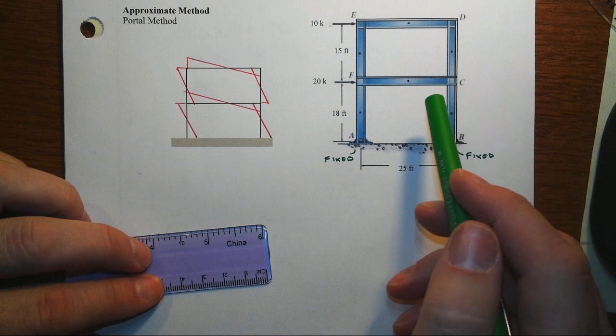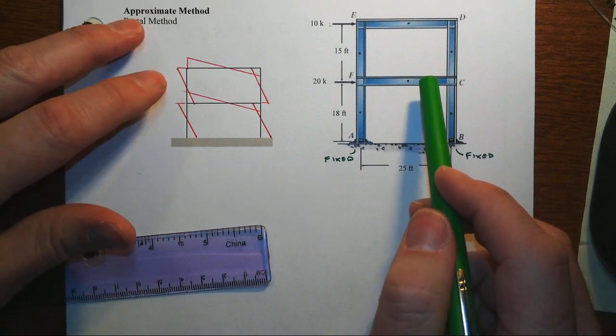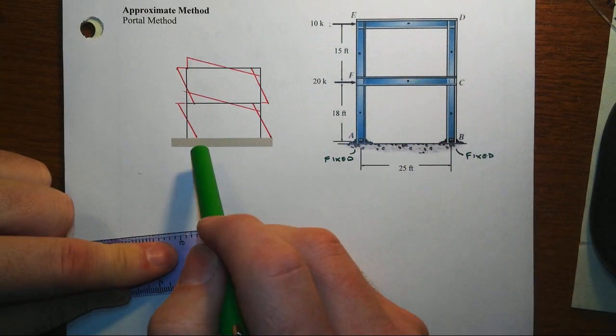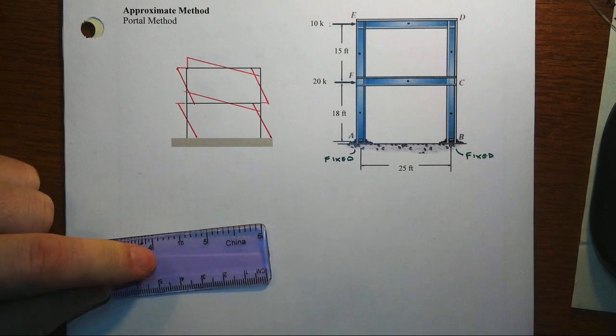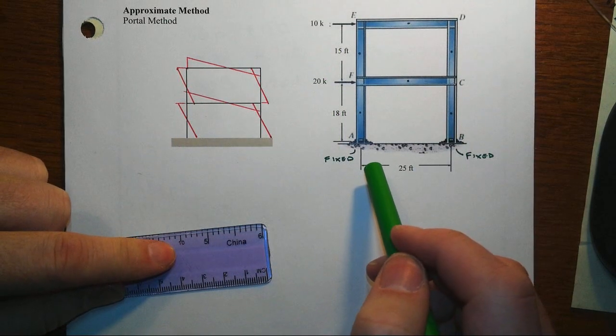In this two-story portal frame that we've got, we're going to apply the portal method as a way to approximate what the moment diagram was going to look like for these applied loads.